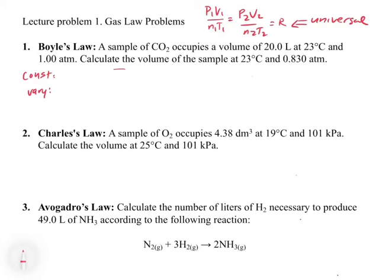Let's look at what's being held constant and what's varying. The temperature is 23 degrees Celsius in both conditions, so temperature is held constant. The pressure is varying — we're going from 1 atmosphere to 0.830 atmospheres — and we want to find the volume, so volume will vary too. The number of moles is also constant because the problem refers to the same sample of CO2 throughout, meaning we're not adding or losing CO2 molecules.